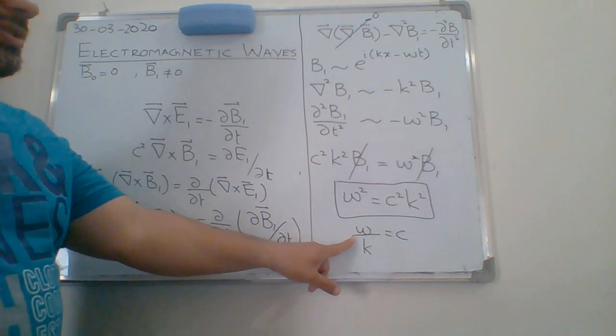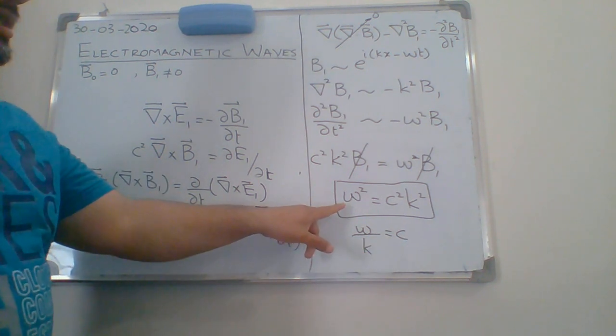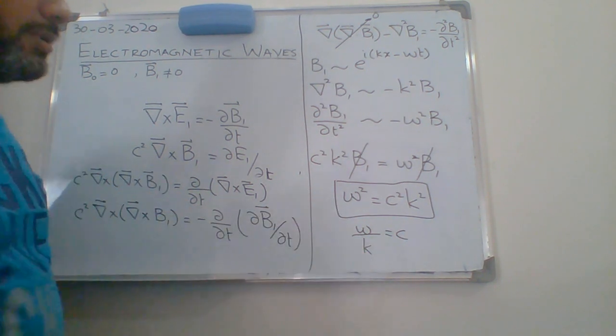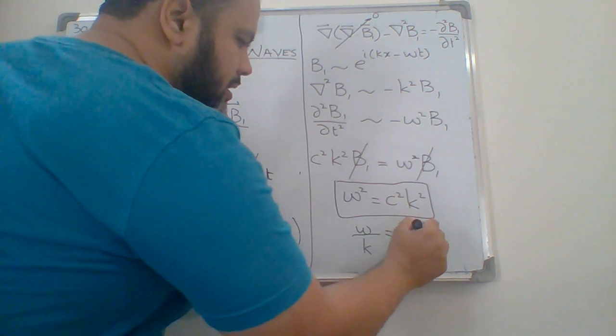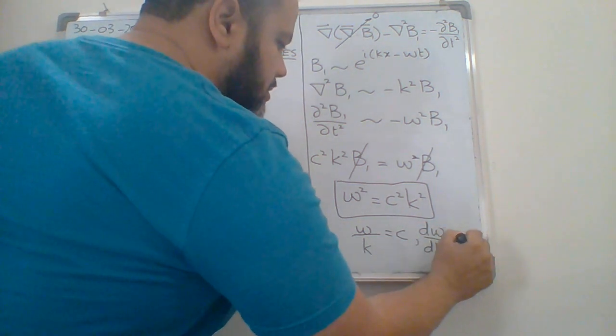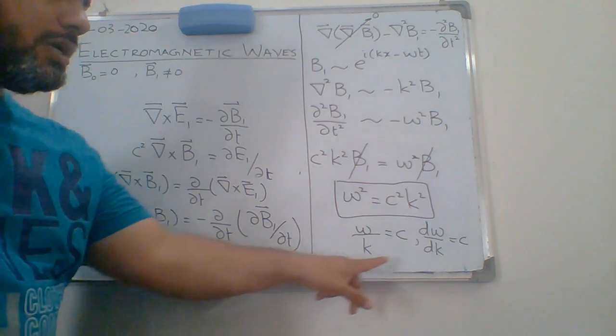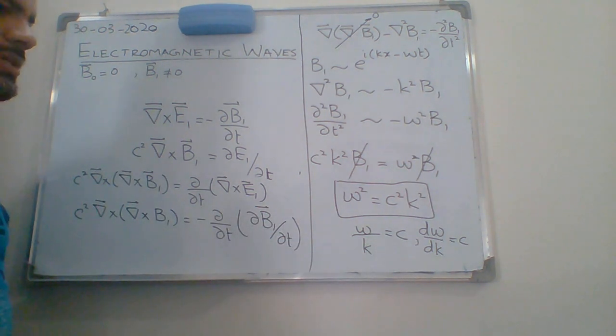That is, the phase velocity of the wave is the speed of light. And also you can see the group velocity, d omega by d k, is also equal to c. So the group velocity is also c and the phase velocity is also c. So this is the electromagnetic waves in vacuum.